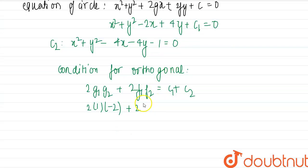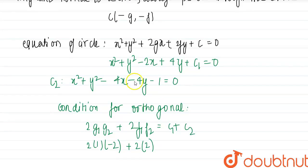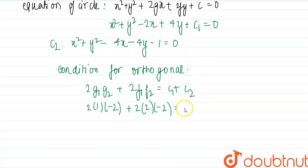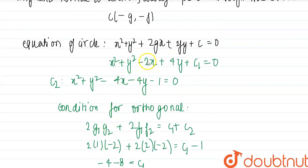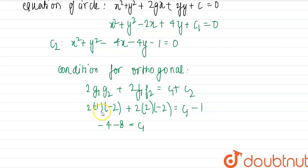So g1 is minus 1, g2 is minus 2 plus 2 times of f1 that is plus of 2 into f2 that is minus of 2, this is equal to c1 and c2 is minus 1. So 2 times minus 1 into minus 2 plus 2 times 2 into minus 2 equals c1 minus 1, so plus 4 minus 8 equals c1 minus 1.